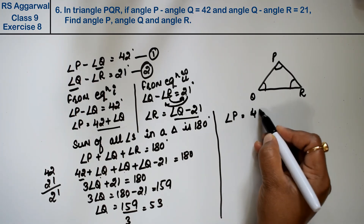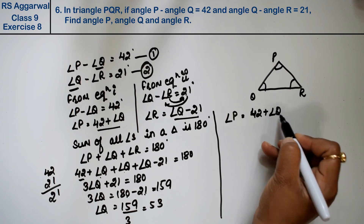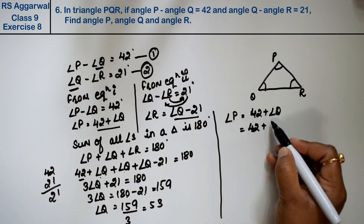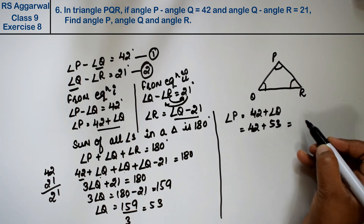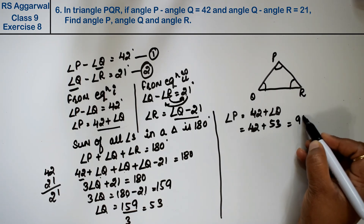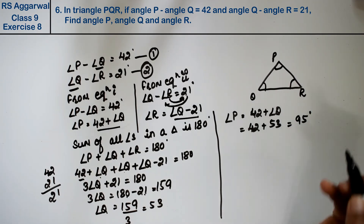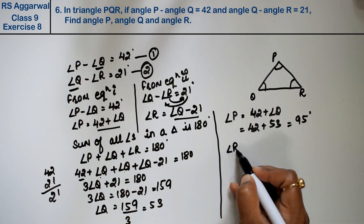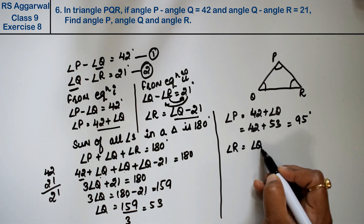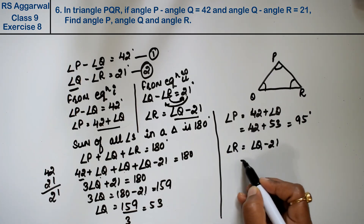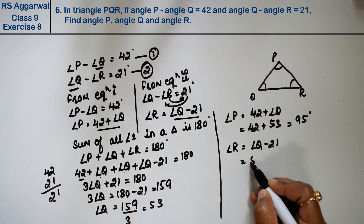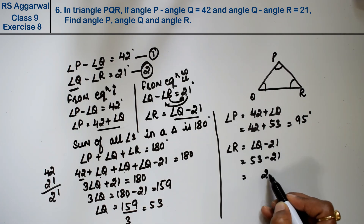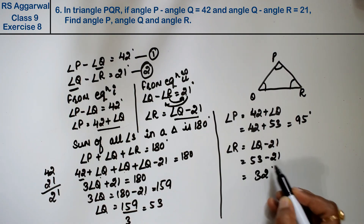Now we find angle P: 42 plus angle Q equals 42 plus 53, which is 95 degrees. And angle R equals angle Q minus 21, so 53 minus 21 equals 32 degrees. So the three angles are: angle P equals 95 degrees, angle Q equals 53 degrees, and angle R equals 32 degrees.